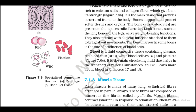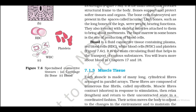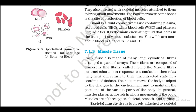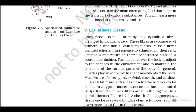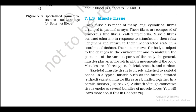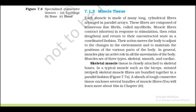Blood is a fluid connective tissue containing plasma, red blood cells (RBC), white blood cells (WBC), and platelets (figure 7.6c). It is the main circulating fluid that helps in the transport of various substances. You will learn more about blood in chapters 17 and 18. 7.1.3: Muscle Tissue.